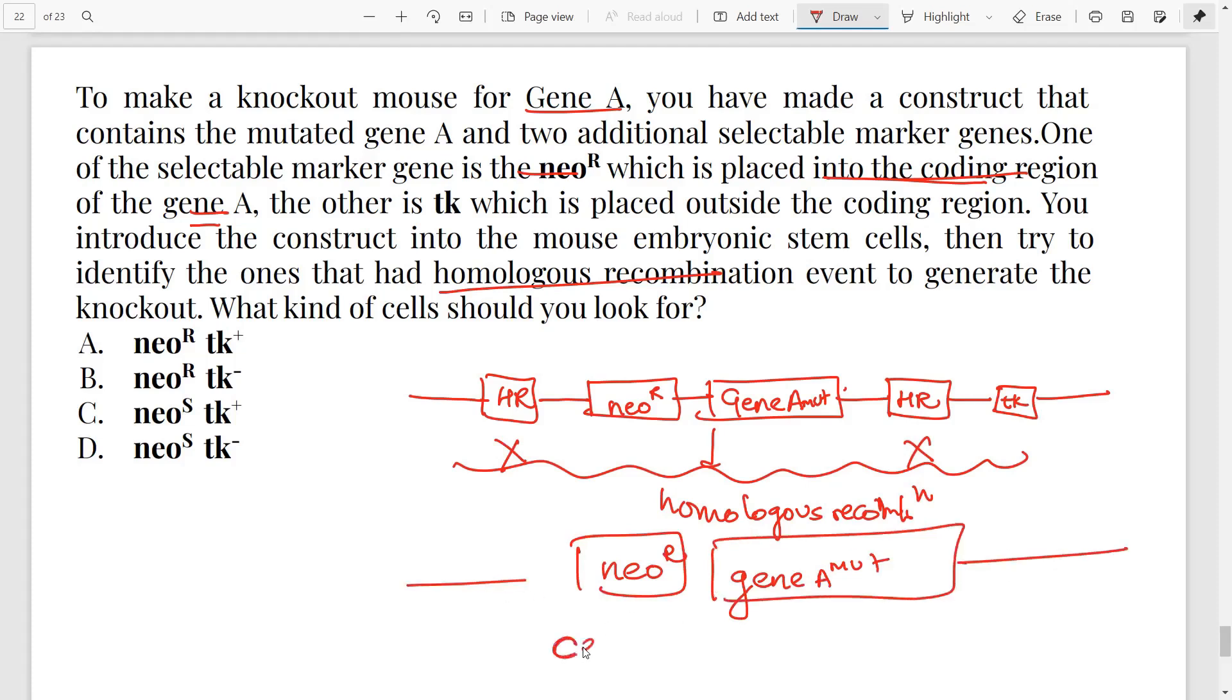So your cells will have neomycin resistance gene. However, they will not have the TK. If they have neomycin resistance gene, then neo-R should be plus. So these two are straightaway not the options, and it should not have the TK. So TK minus. So this is the selection that you are looking for. This is the answer.